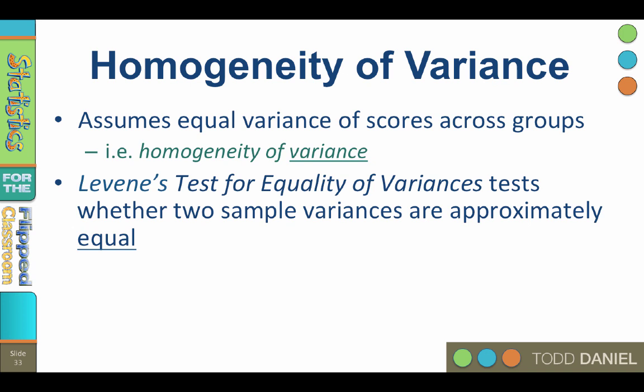Levine's test for equality of variances is a test of whether the variances of the samples or groups are approximately equal, or homogeneous. Now this is the same test that we learned about with t-tests. We will ask for this when we run the ANOVA on the computer.